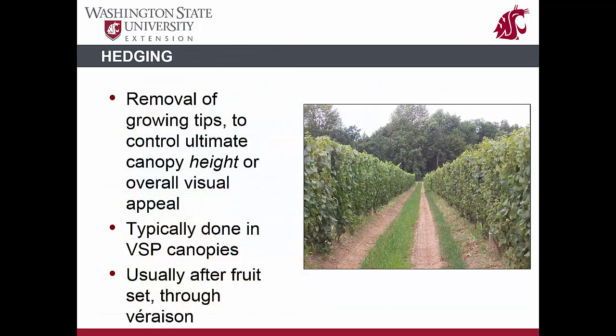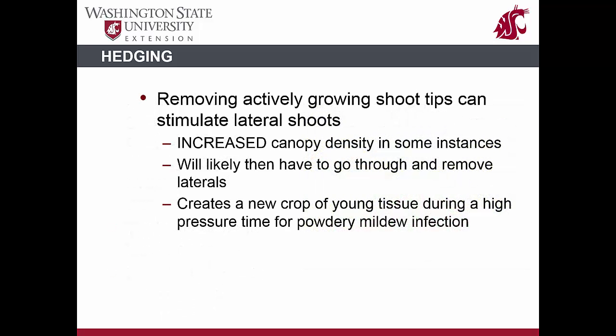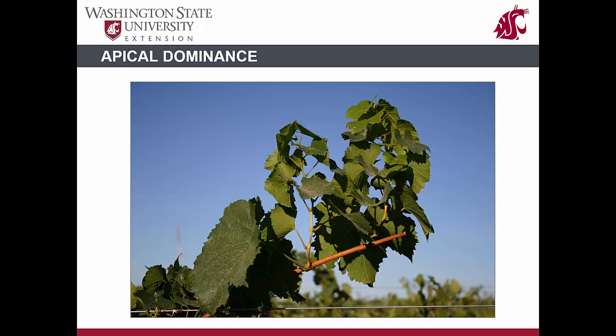Hedging is the act of removing the growing shoot tips to control the ultimate height of a vineyard. It is commonly done in VSP canopies and is typically done between fruit set and veraison. When actively growing shoot tips are removed, an energy sink is also removed and the apical dominance of the shoot is lost. This causes the shoot to temporarily stop growing. That energy is diverted to either the developing clusters or the development of summer lateral shoots, which are offshoots that can grow on the main shoot. The growth of lateral shoots creates a denser canopy with several new growing shoot points, providing susceptible tissue for powdery mildew infection. This picture is an example of cutting the shoot tip that results in summer lateral shoot growth.